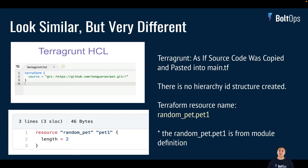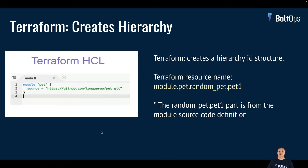With the Terragrunt HCL, there's a Terraform keyword and then there's a source. What it does is as if the source code was copied and pasted directly into that folder — as if you wrote main.tf in that same folder. So the result is a resource name like random_pet.pet1, which is exactly what you expect. With Terraform it's different — you have module.pet, and that gets prepended in front of the resource name, giving you module.pet.random_pet.1.